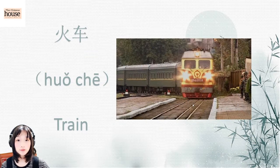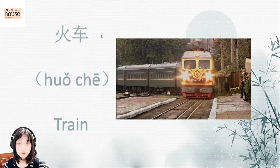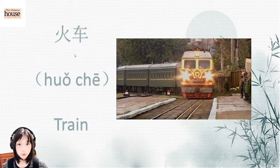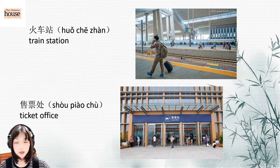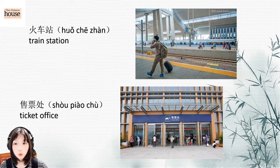So first of all, we have to learn these two new words. We have learned before: 火车 (huǒchē), which means train. First: train station — 火车站. 站, which we have learned before, means station.